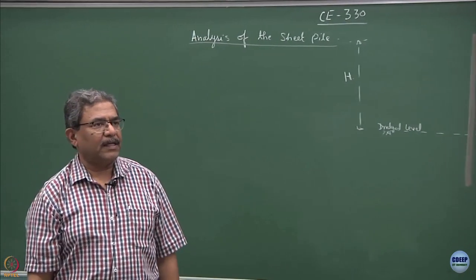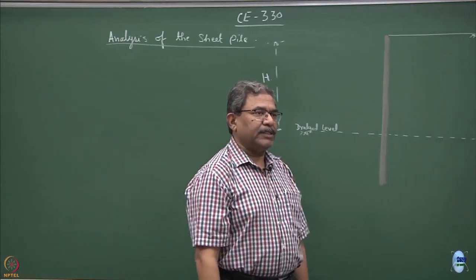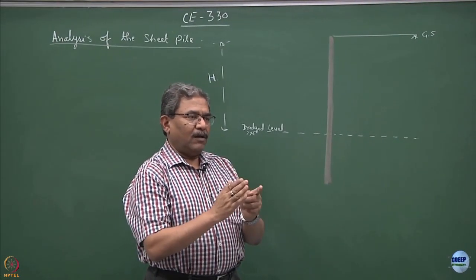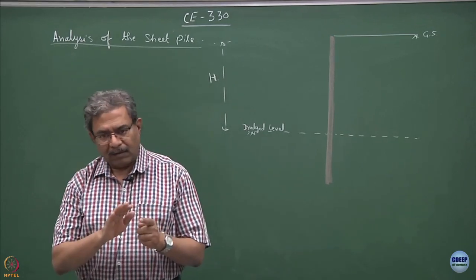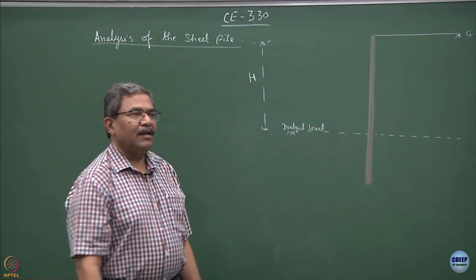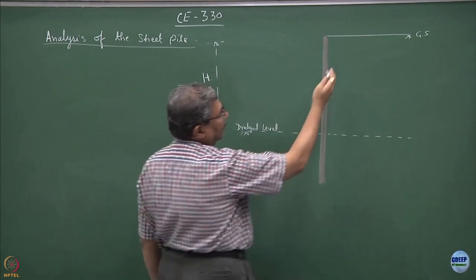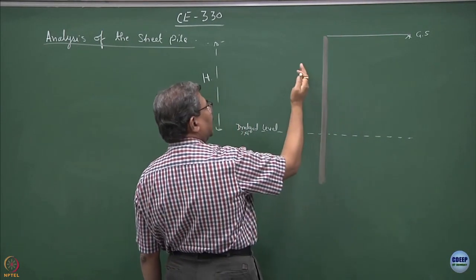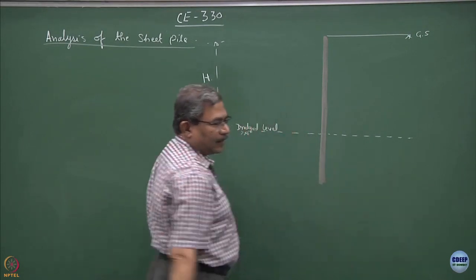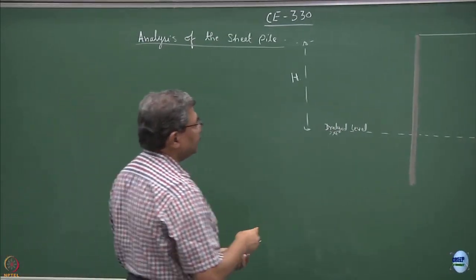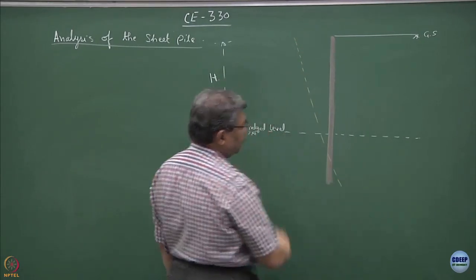This portion of the soil mass can be considered a passive zone because if the pile deflects on the left-hand side, this portion is trying to move into the soil mass. When discussing earth pressure theory for retaining walls, we define active earth pressure as movement of the wall away from the backfill, and passive earth pressure as movement of the wall into the backfill. So this pile deflects left on the upper part and right on the lower part.